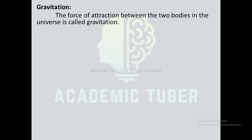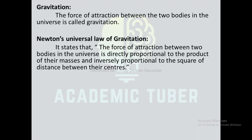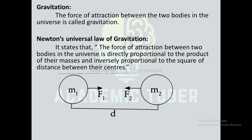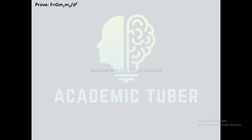Gravitation: the force of attraction between two bodies in the universe is called gravitation. It was first propounded by Newton. Newton's Universal Law of Gravitation states that the force of attraction between two bodies in the universe is directly proportional to the product of their masses and inversely proportional to the square of distance between their centers. When mass increases, force of attraction increases; when distance increases, force decreases. It was propounded in 1687 AD. Proof: F = Gm₁m₂/d².